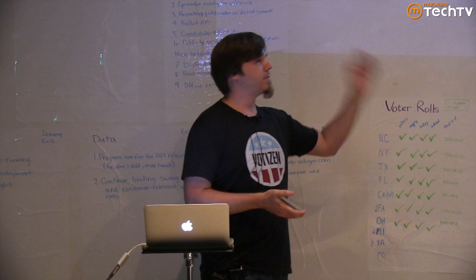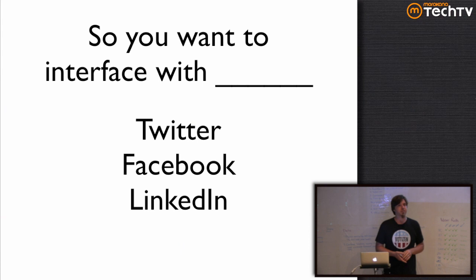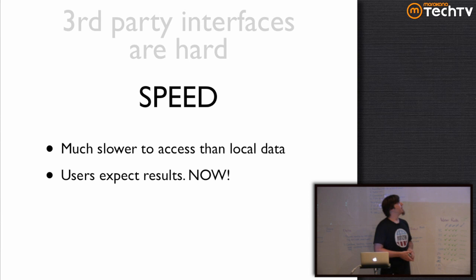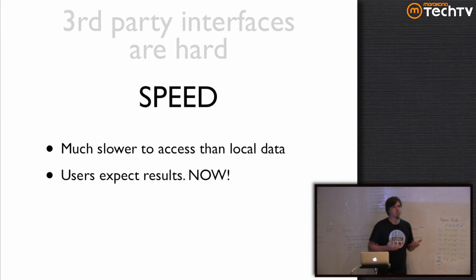So let's say you want to interface with Twitter, Facebook, LinkedIn, whatever social network, but you have a problem because third-party interfaces in general are hard. There are lots of reasons for this, but a few are that they are slow. It is so much slower to call an external service than anything you have internally, even the hard disk. But users don't understand this — they want results right now. They can see their friends instantly on Facebook. Why can't they see them on your site? Why are you slowing down what they're trying to do?